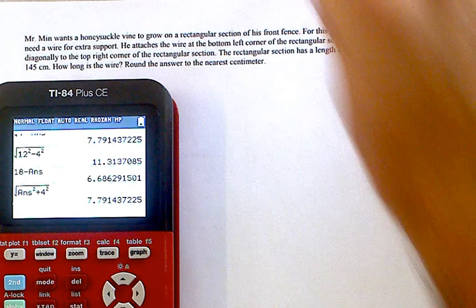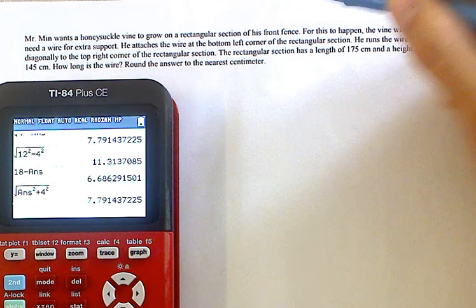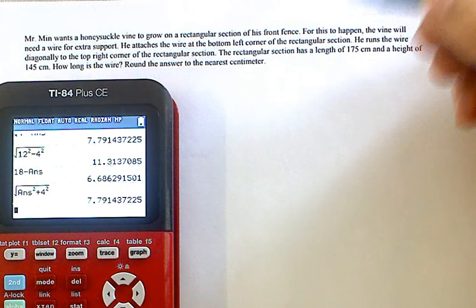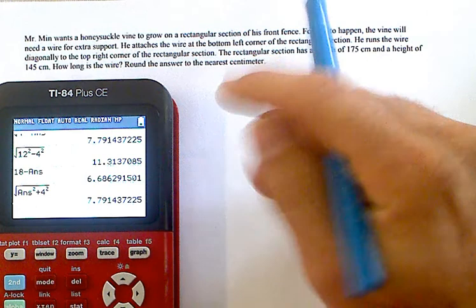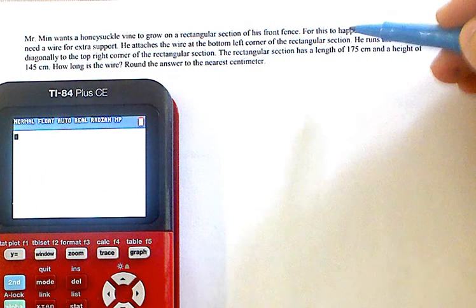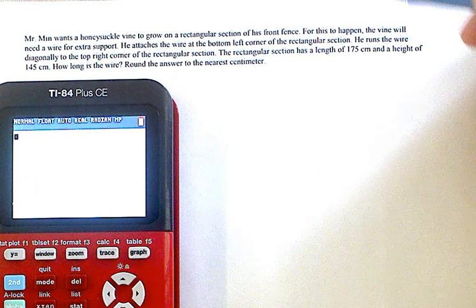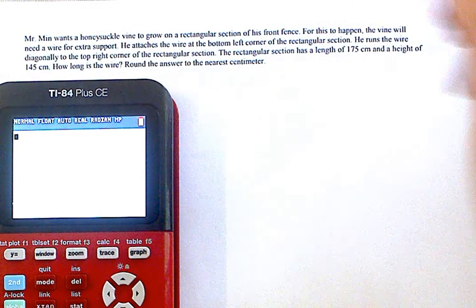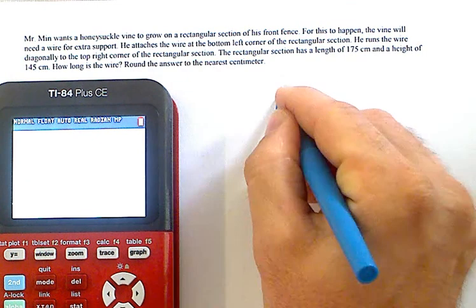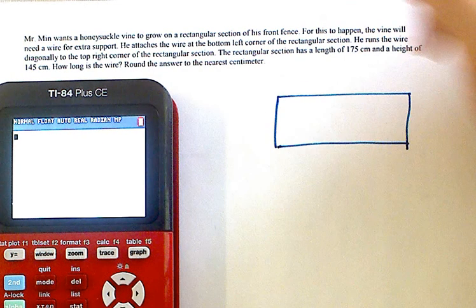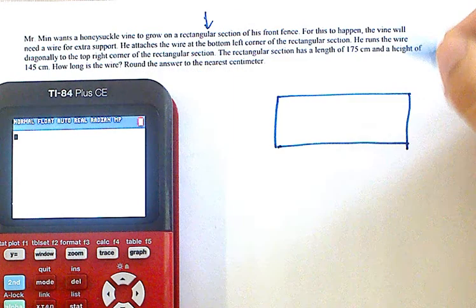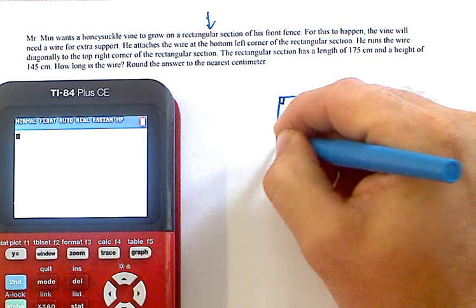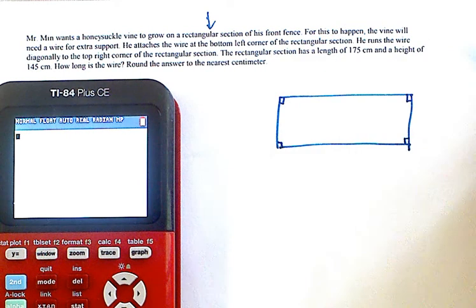A lot of these right triangle word problem questions are going to offer you some information that will lead you to basically develop a right triangle. So this honeysuckle vine rectangular section, that's the first piece. That's really the only thing you need to take from this is this rectangular section. Any rectangle is a rectangle because it is made up of four right angles.